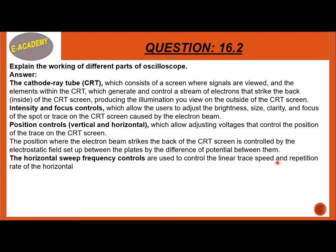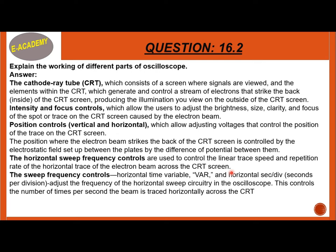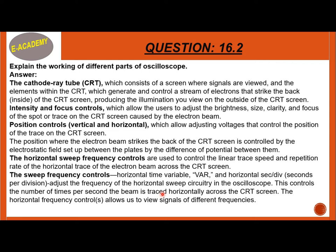Next is the horizontal sweep frequency control. These are used to control the linear trace speed and repetition rate of the horizontal trace. The horizontal time variable and horizontal seconds-per-division adjust the frequency of the horizontal sweep circuit in the oscilloscope, controlling the number of times per second the beam is traced horizontally across the CRT screen.